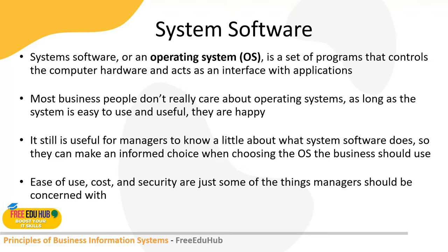In order to run or install any application on your computer, you must first have an operating system — which we call system software. Whenever we are buying any application, we'll have to make sure that the application is compatible with the operating system, otherwise you'll have to upgrade all operating systems in your organization.